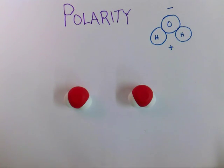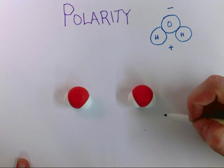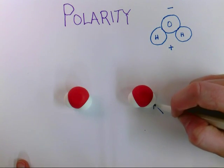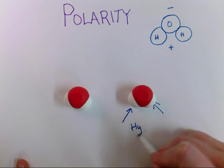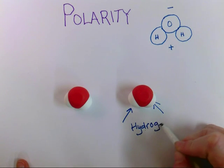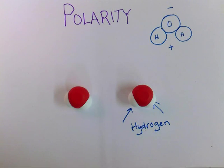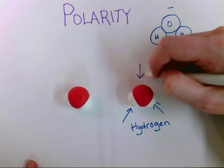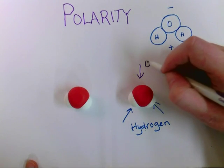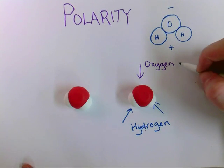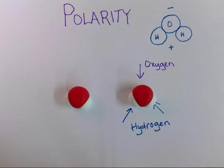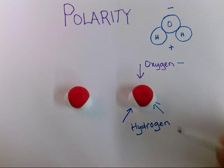Here, I have two three-dimensional models of a water molecule. The white pieces here and here are the hydrogens. The red pieces at the top here, this is oxygen. Again, the oxygen has a negative charge and the hydrogen has a positive charge.